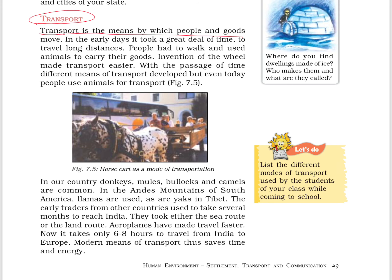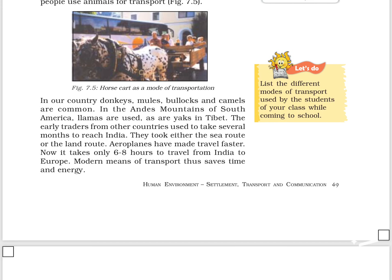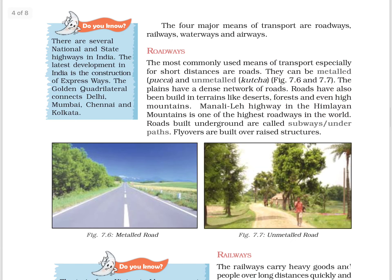Transport is a means by which people and goods move. In olden days, and even now in some places, animals are used for transportation. Donkeys, mules, pack cows, and camels are common in India. In the Andes mountains of South America, llamas are used, as are yaks in Tibet. There are four major means of transport: roadways, railways, waterways, and airways.